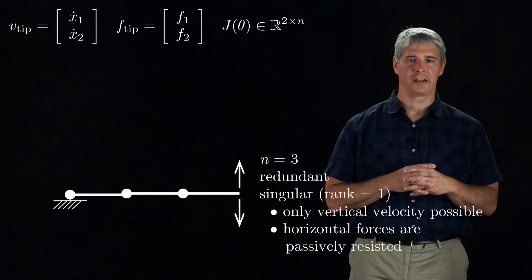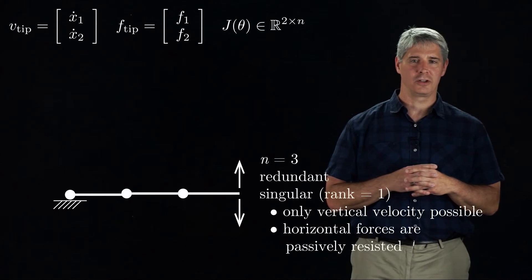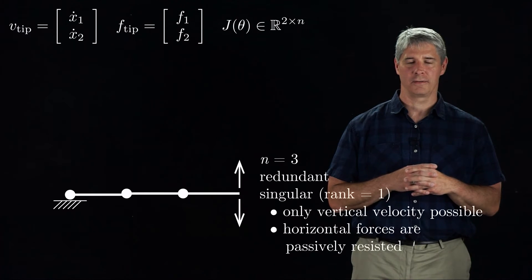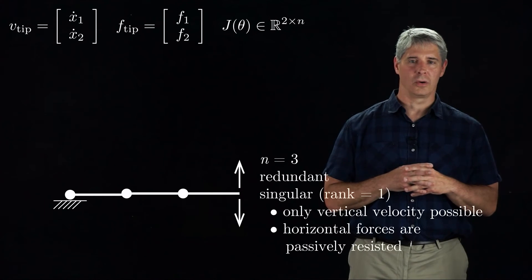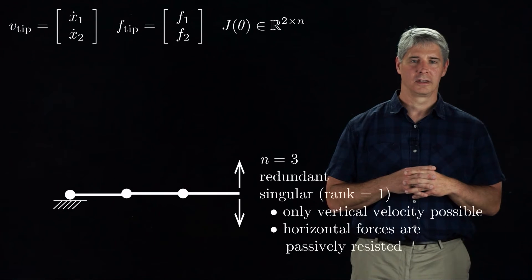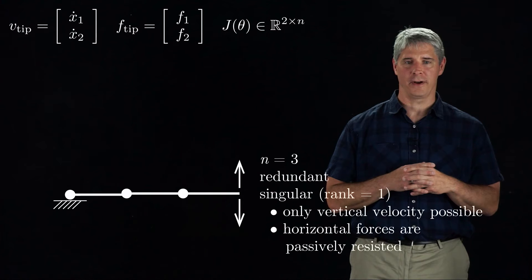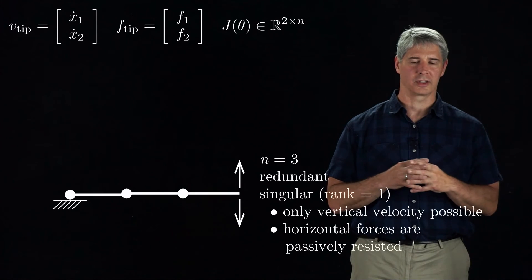Moving on, let's consider the redundant 3R arm when it is fully stretched out. The rank of the 2x3 Jacobian drops to 1, meaning the arm is at a singular configuration. Rotation at joint 1, 2, and 3 produces only vertical velocity at the end-effector. No horizontal velocity can be achieved. Also because of the singularity, a horizontal force applied at the end-effector is resisted by the mechanical structure of the robot. No joint torques have to be applied.